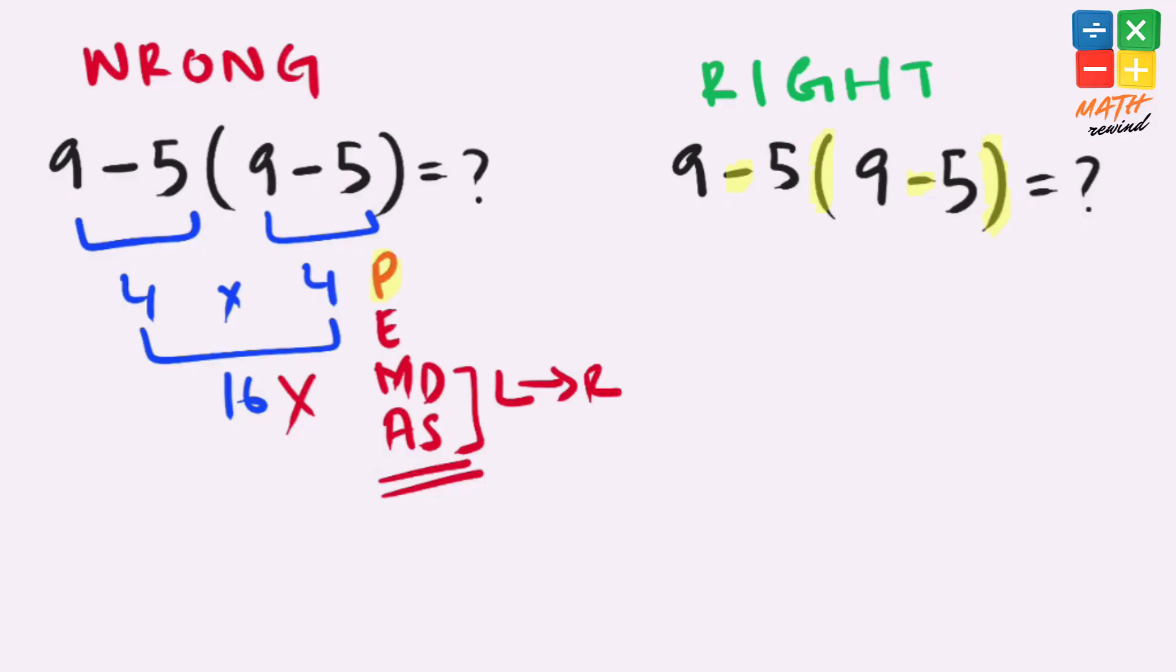And according to the rules, parenthesis have highest priority. So let's solve what we have inside parenthesis. We have 9 minus 5 that gives us 4, and our expression simplifies to 9 minus 5 times 4.